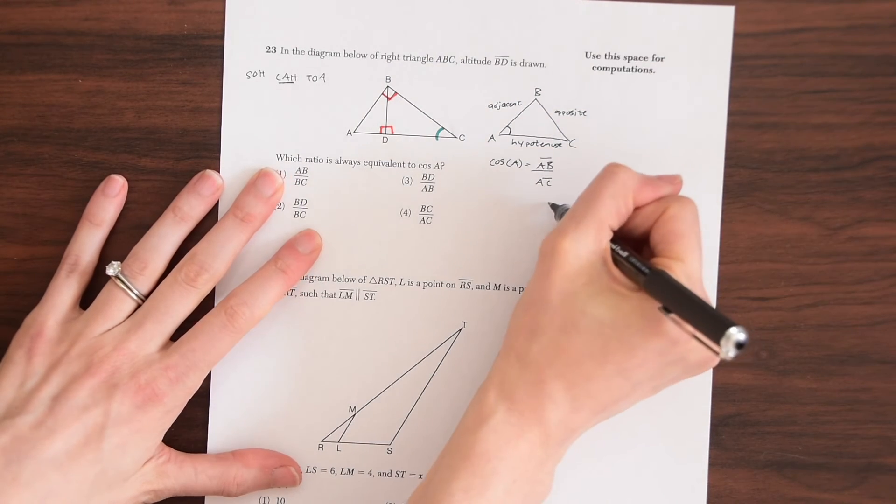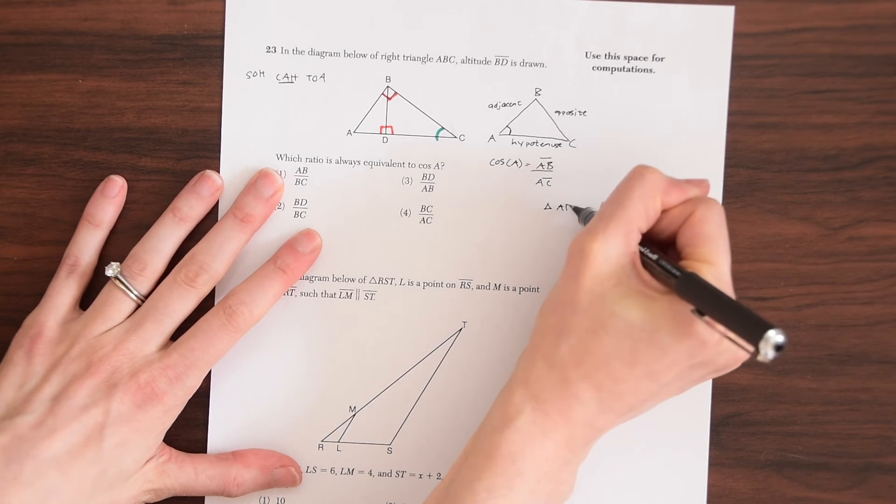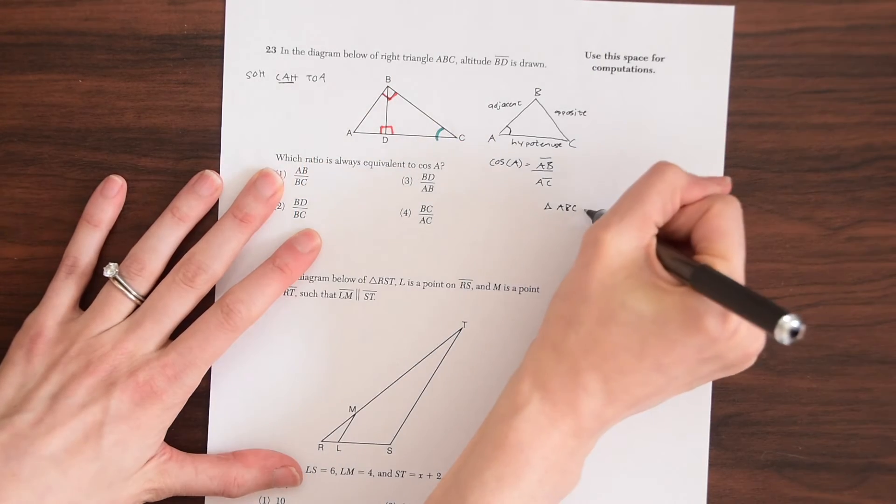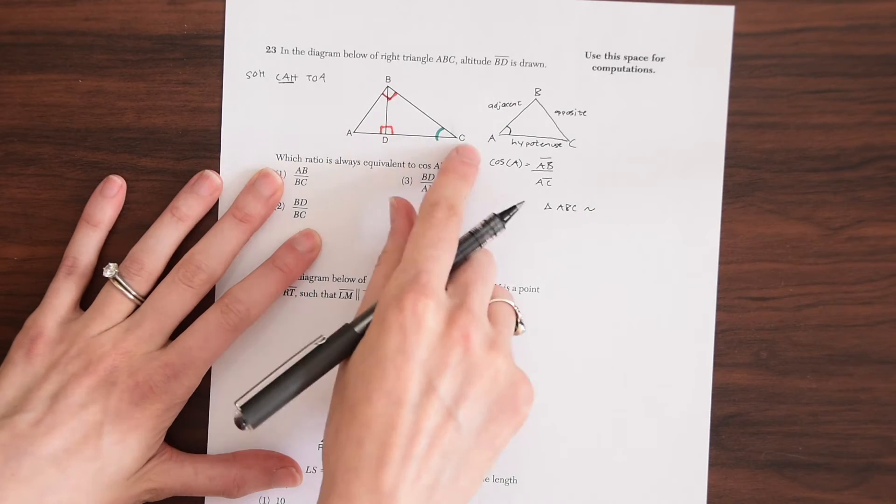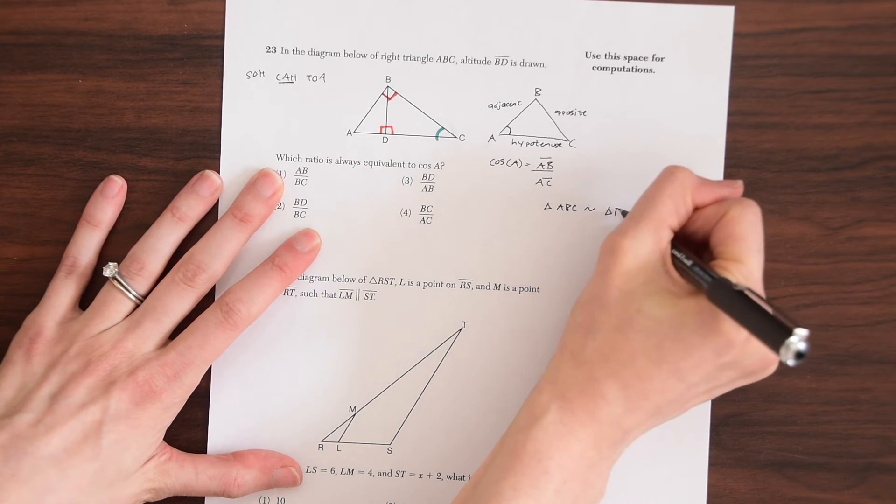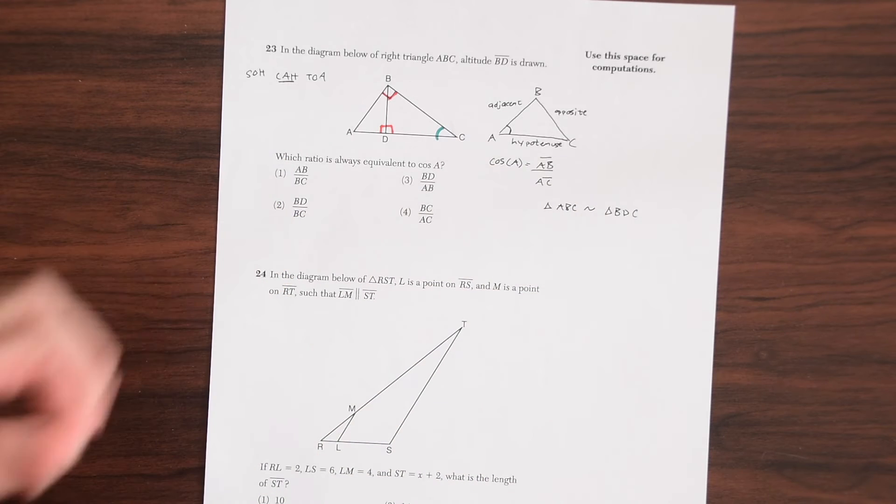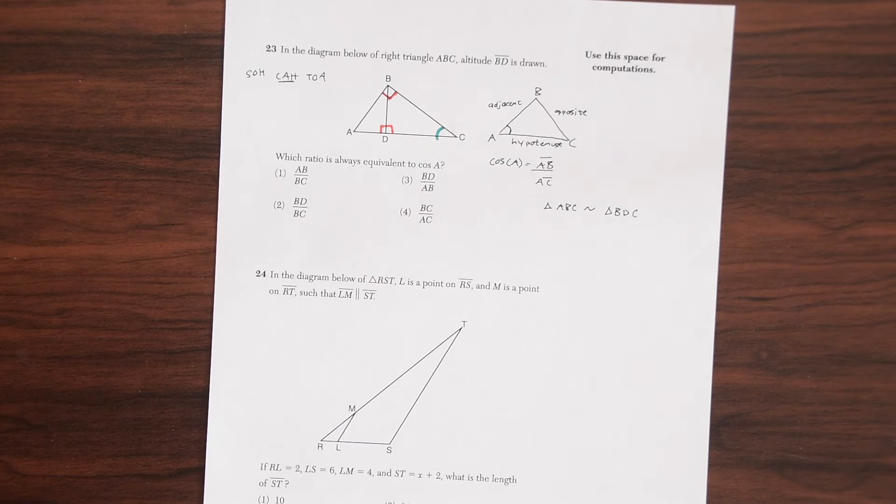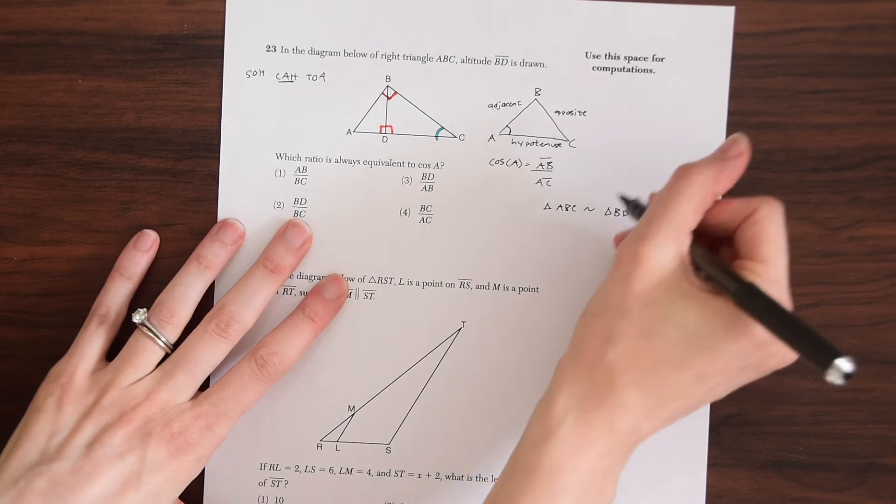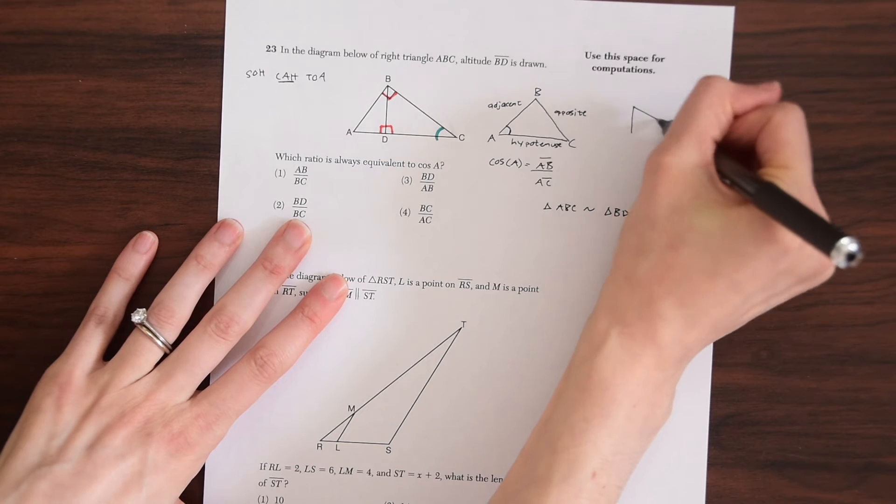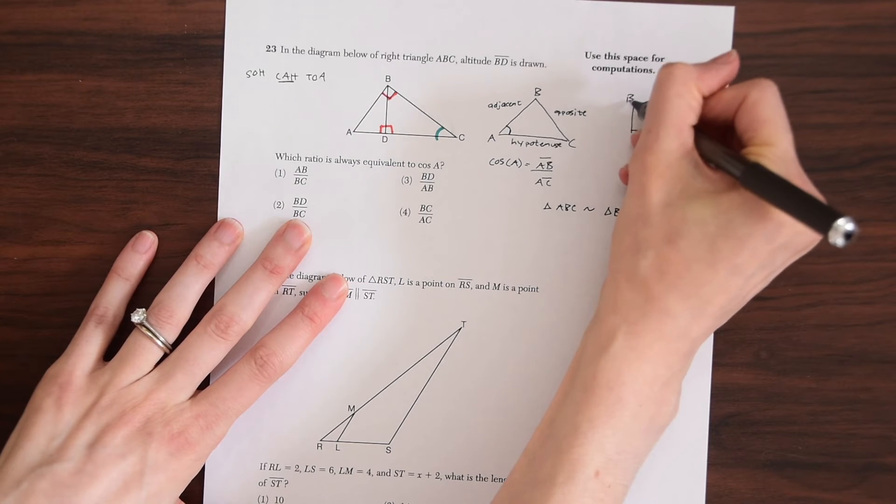is similar to triangle BDC. So that's just one method of proving two triangles similar if they have two congruent angles. So if you notice triangle BDC looks like this, BDC. It has that right angle down here.